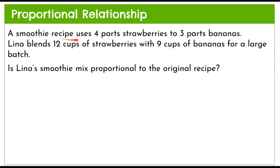Here is a given relationship. A smoothie recipe uses four parts strawberries to three parts bananas — notice it says parts, not ounces or cups. Lena, using this recipe, decides to blend 12 cups of strawberries with 9 cups of bananas for a large batch.